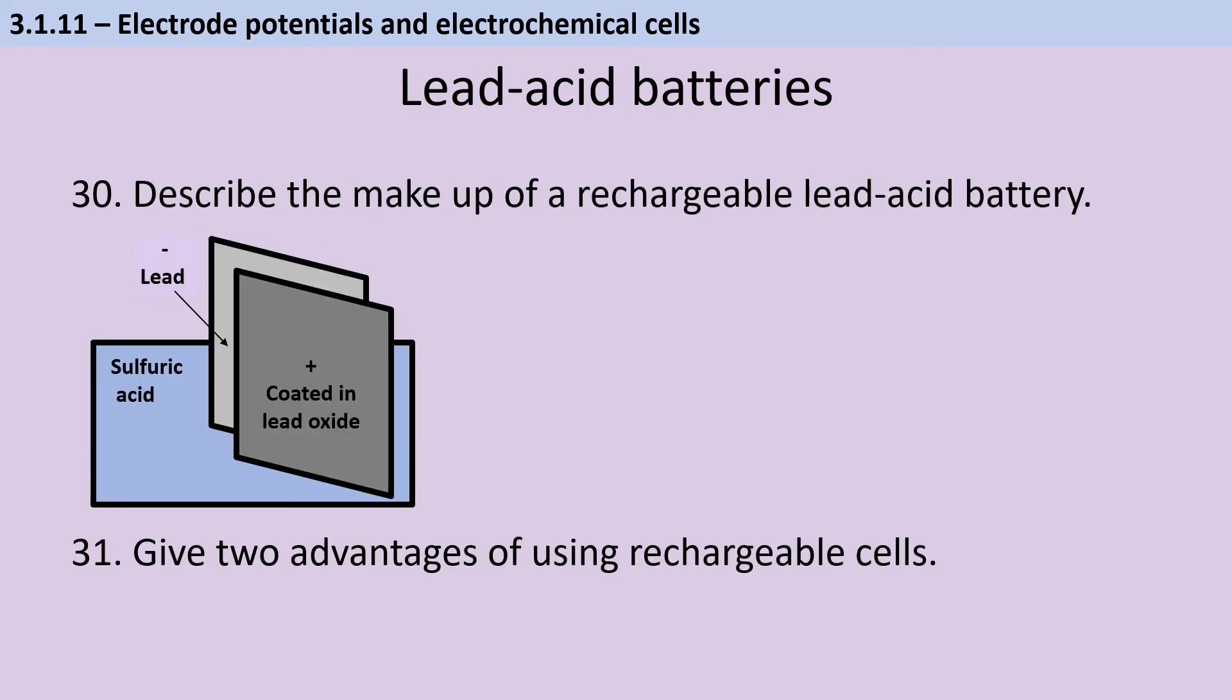Lead-acid batteries are the type of batteries that you find in your car and they're often made of six cells which are wired together in series. So each one has got quite a small potential difference, but when you wire them together, you make a 12 volt battery. And the makeup of each of these cells is quite straightforward. So you have a sulfuric acid electrolyte and into this are submerged lead plates and the anode is made of just lead and then the cathode has been coated in lead oxide.